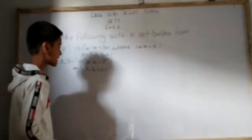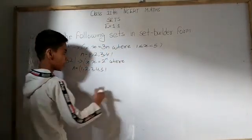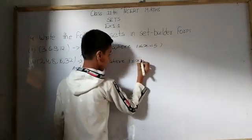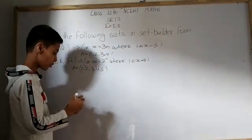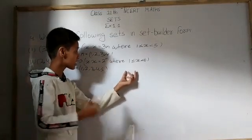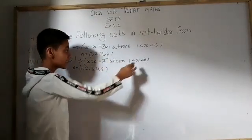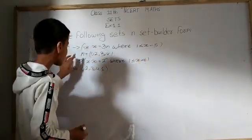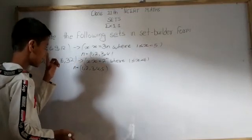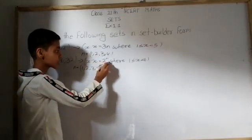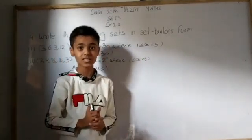So we write x = 2ⁿ. Now for the constraint: the smallest n is 1, so 1 ≤ n. The largest n is 5, and the next number is 6, which is not part of the set, so n < 6. Our final set builder form is: { x : x = 2ⁿ, where 1 ≤ n < 6, n is a positive integer }. This was today's topic, thank you.